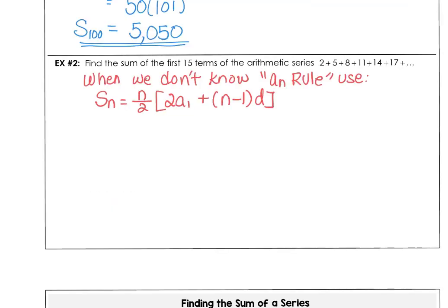For example 2, we want to find the sum of the first 15 terms of the arithmetic series 2, 5, 8, 11, 14, and 17. When we don't know that a sub n rule, we can use the second formula. We know the first term is 2, the difference is adding 3, and the nth term is the 15th term.